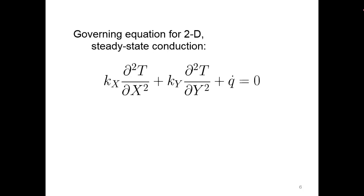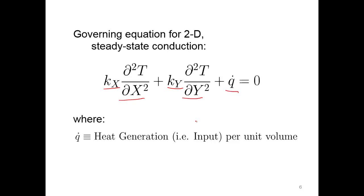The governing equation for 2D steady-state conduction is: the conduction coefficient in the X direction times the second derivative of temperature with respect to X, plus the conduction coefficient in the Y direction times the second derivative of temperature with respect to Y, plus the heat generation per unit volume Q-dot. If the volume is actually generating heat, we include that term. The area disappears because we divide through by it. That's our steady-state conduction equation.